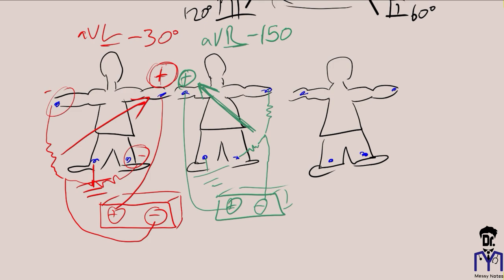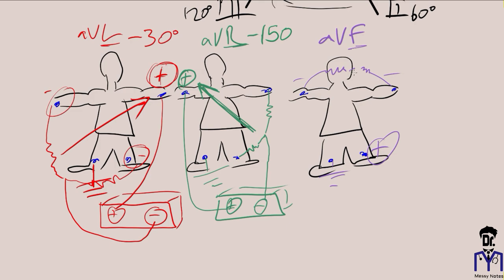For AVF, 'F' is for foot — we make the left leg positive and the other limbs negative, with the right ankle still as ground. AVF's angle of orientation is 90 degrees, pointing downward.